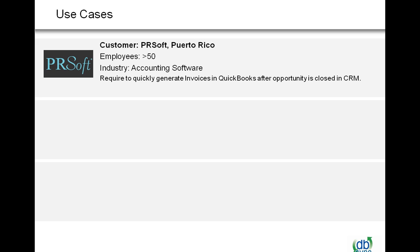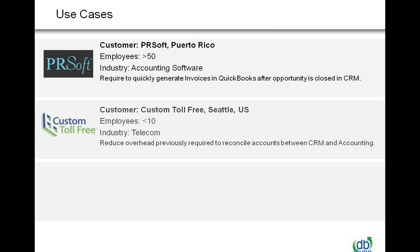Now I'm going to give you a background of the application and some integration work that we've done. PRSoft is a company based in Puerto Rico. They have over 50 employees and they're in the accounting software industry. They use dbSync so they could generate invoices in QuickBooks after the opportunity is closed in Salesforce. So all the salespeople are well informed regarding what invoices have to be sent, and accounting staff get to see all invoices coming in as an opportunity gets closed, cutting down double data entry and reducing total turnaround time.